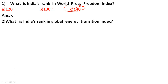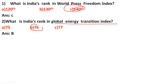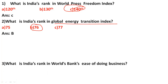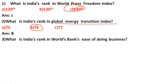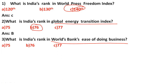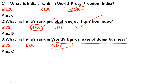What is India's rank in the Global Energy Transition Index? The correct answer is option B: 76th rank. Next, India's rank in the World Bank Ease of Doing Business Index — the correct answer is option C: 77. So remember, Global Energy Transition Index is 76 and Ease of Doing Business is 77.